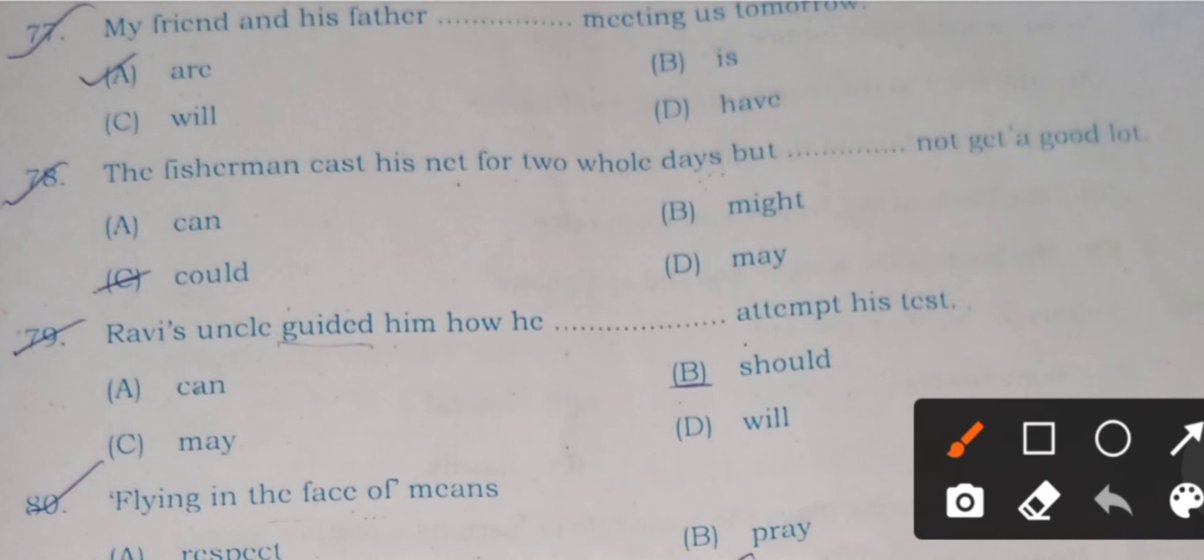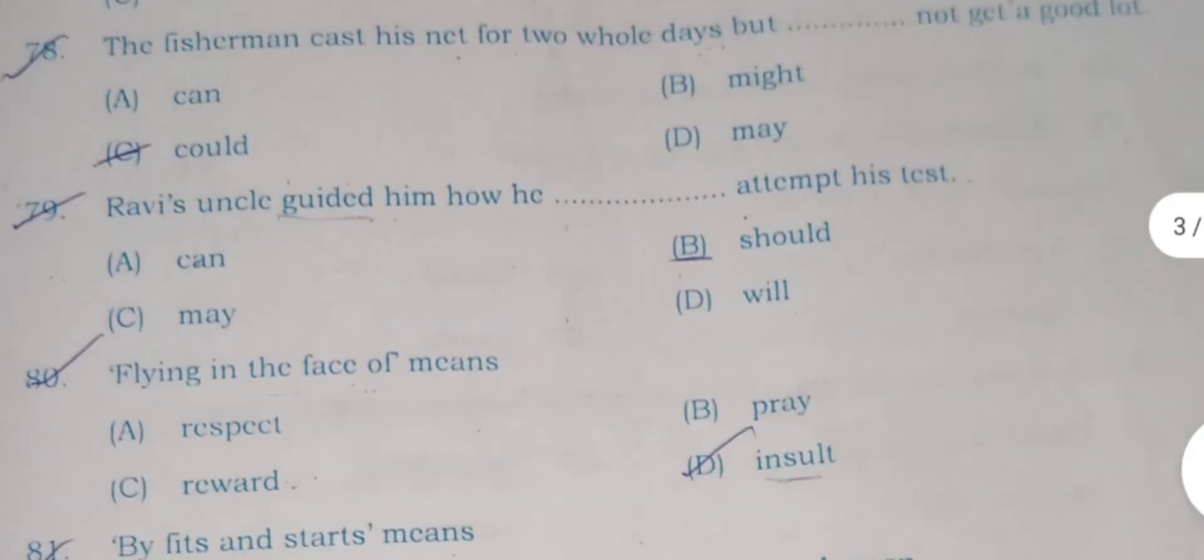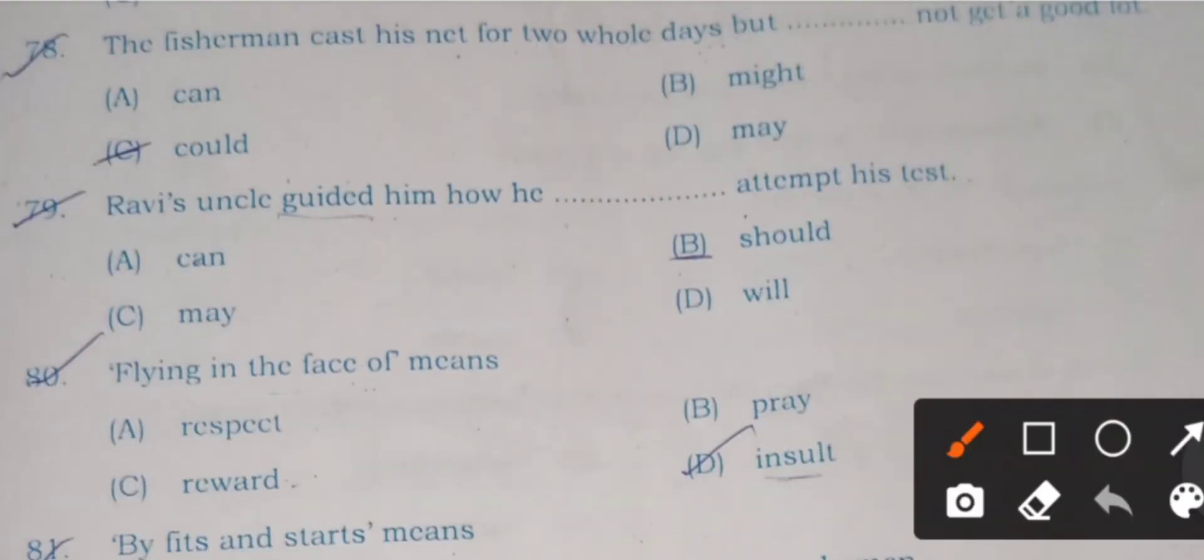Question number 79: Ravi's uncle guided him how he should attempt his test. Here B is the right answer, 'should'.